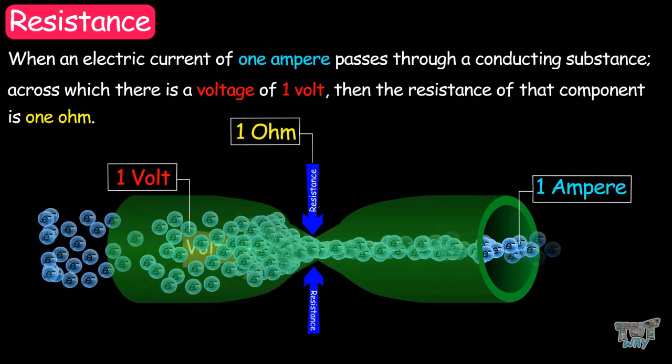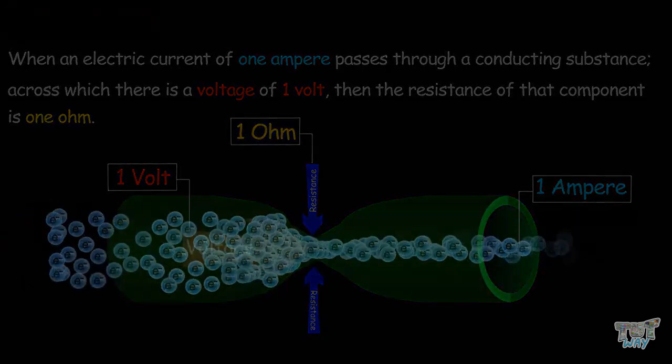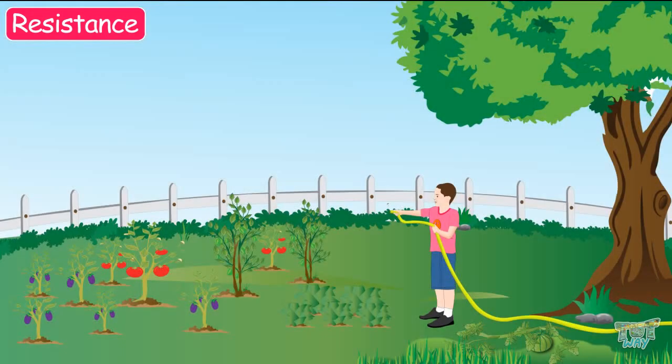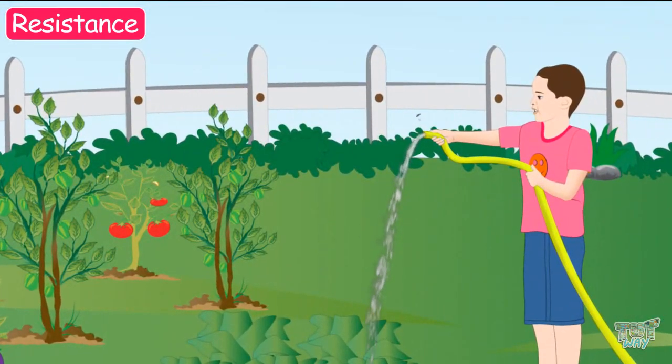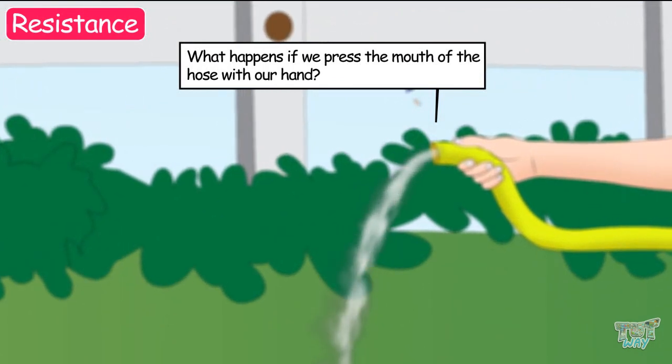Let's take an example to understand the concept of resistance even more. Here we have a pipe through which water is flowing. We often give water to plants using a pipe. What happens if we press the mouth of the pipe with our hands?